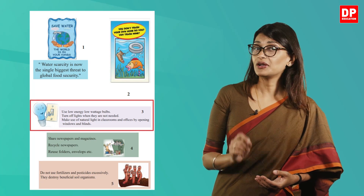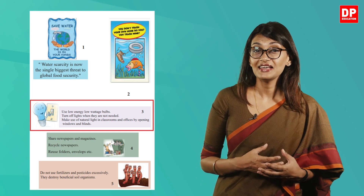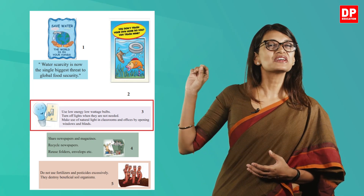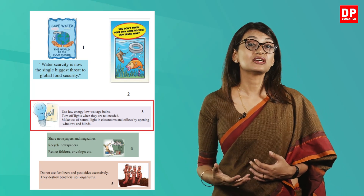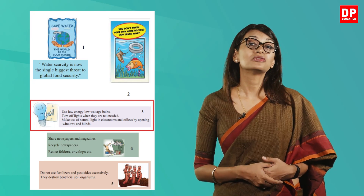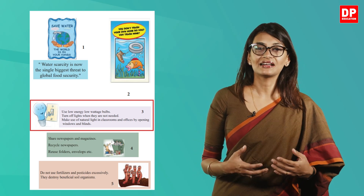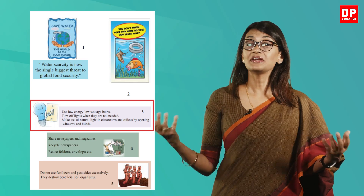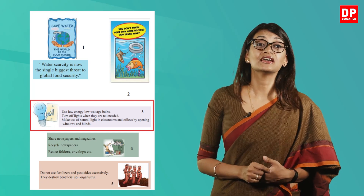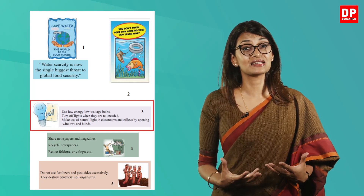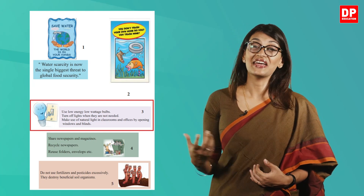The third one may not look like a poster but seems to have the same function. The picture is quite cute — a light bulb switching off the electricity. Alongside the image, the words say: use low energy, low wattage bulbs, turn off lights when not needed, and make use of natural light in classrooms and offices by opening windows and blinds. This image tells us to be more mindful of using electric light and to save energy.